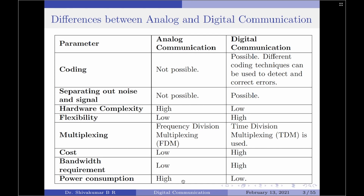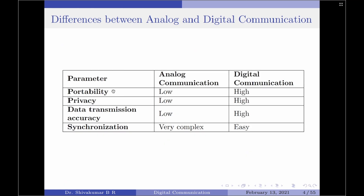On the other hand, digital communication systems consume considerably low power. The next parameter is portability. Analog communication systems are not very portable, and therefore portability is considered low for analog communication, whereas for digital communication it is considerably high.